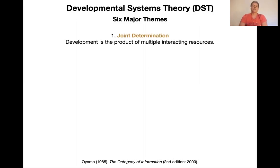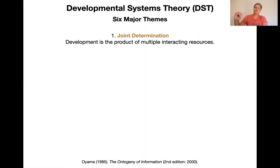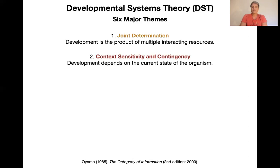The first theme is joint determination of form: development is the product of multiple interacting resources, not a single program that produces an interactor from a replicator. Development is highly context-sensitive and contingent — it depends on the current state of the organism, involving history dependence and radical context dependence. Third is extended inheritance: you don't just get genes from your parents; you also inherit a great deal of the environment you're in. Developmental systems theory emphasizes that offspring usually live in the same environment as their parents.